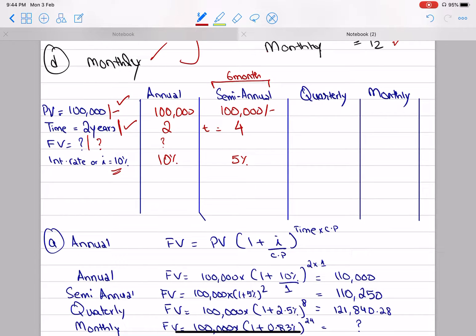Similarly, quarterly will be this way. In a year, there are 4 quarters. How many quarters in 2 years? 8. If the return for 1 year is 10%, then the return for 1 quarter will be 2.5%.